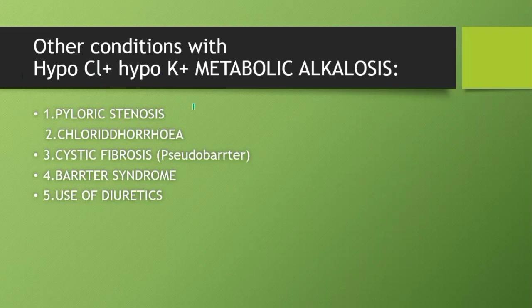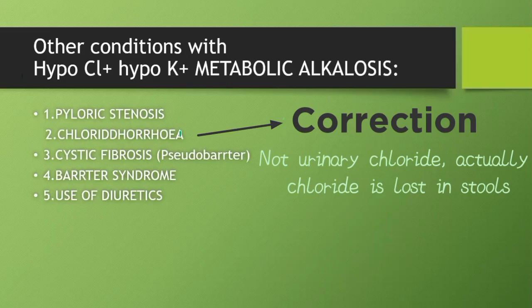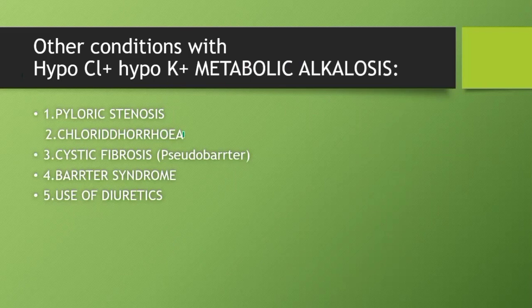Congenital chloride diarrhea is a congenital chloride-losing channelopathy. It also presents with hypochloraemia, hypokalemia, and metabolic alkalosis. How you differentiate from pyloric stenosis: in pyloric stenosis there is projectile vomiting, whereas in chloride diarrhea there will be a history of diarrhea for about three to four months with huge loss of chloride. The urinary chloride will be very high — whenever urinary chloride excretion is high, think about chloride diarrhea.